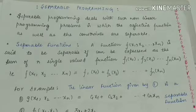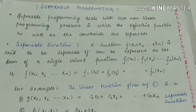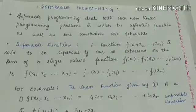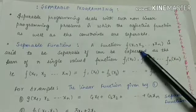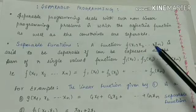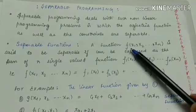The term 'separable' comes from the word 'separate.' When a big thing is divided into small things, they are called separate. Similarly, if a big function is divided into small linear functions, we can say that big function is separable in nature. That is the concept we will study today.